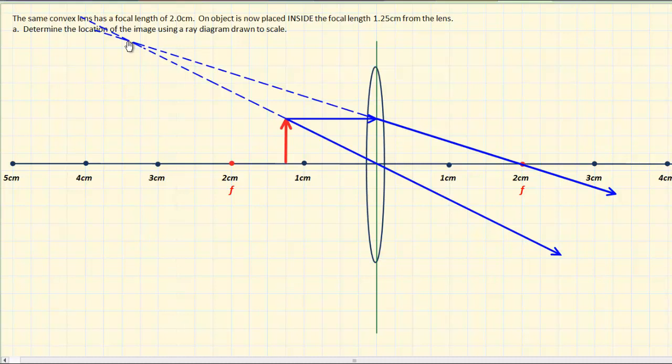Now before we sketch in our image, we can do one more ray that's associated with this focal point. Now remember, we had one that was parallel, goes through the focal point. If I start a ray in line with this back focal point, it will eventually end up parallel. Let's try it now.